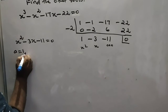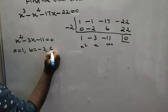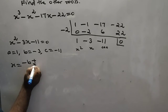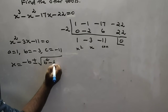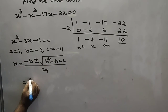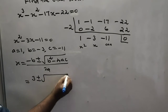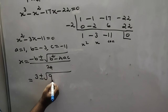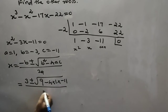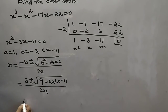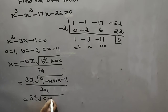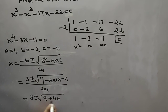Setting x squared minus 3x minus 11 equal to 0, we identify a equals 1, b equals minus 3, c equals minus 11. We cannot factorize directly, so we use the quadratic formula: x equals minus b plus or minus root of b squared minus 4ac, divided by 2a.